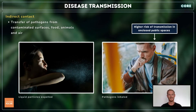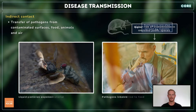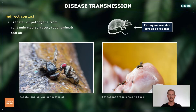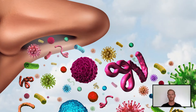Whenever we sneeze, cough, talk, or even breathe, we expel a fine spray of liquid particles that remain suspended in the air for some time. Pathogens in these tiny droplets may then be inhaled by other people or land on exposed food. Bacteria is also spread by insects like houseflies, which transfer bacteria from decaying food or faeces to fresh food via their feet and mouthparts.